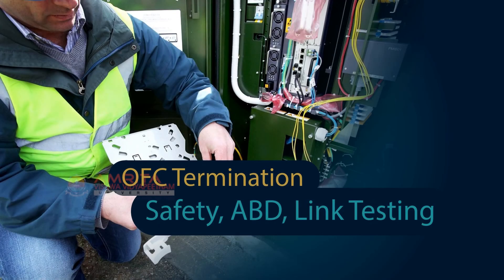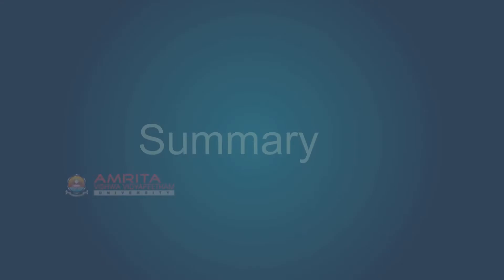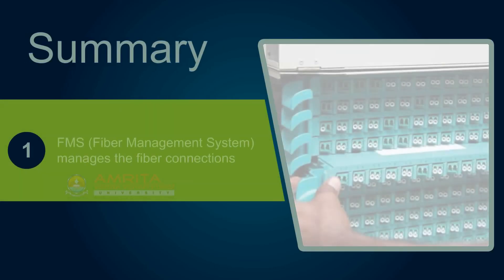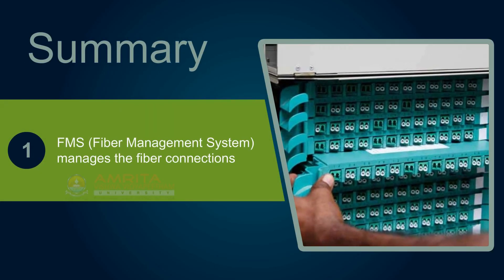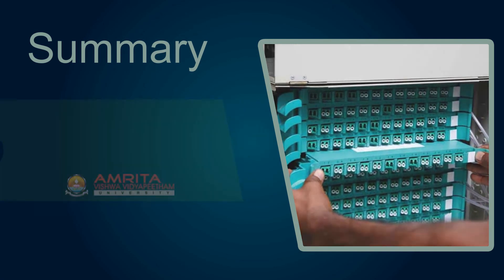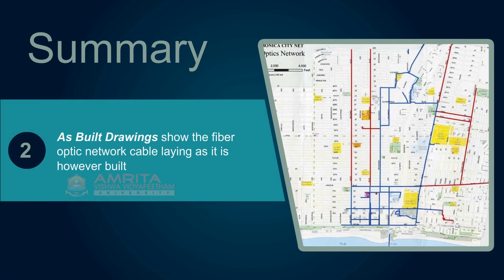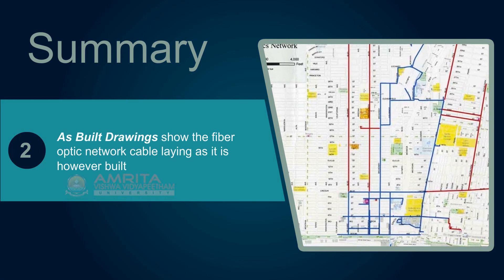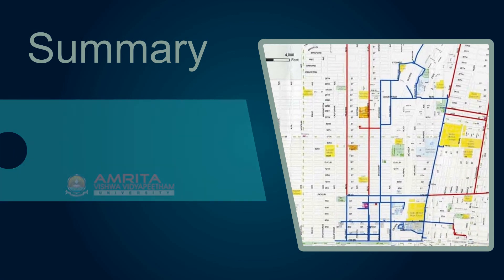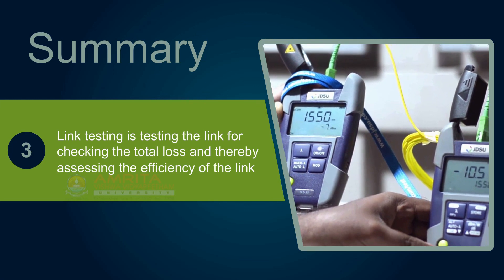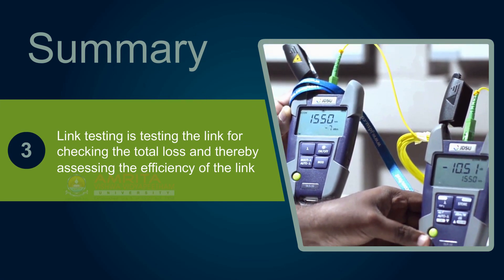With that, we've come to the end of the session. Let's take a look at the key points. FMS, or Fibre Management System, manages the fibre connections. As built drawings show the fibre optic network cable laying as it is built. Link testing is testing the link for checking the total loss and thereby assessing the efficiency of the link.